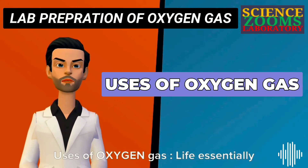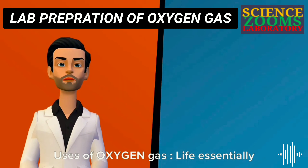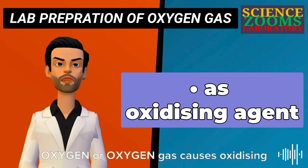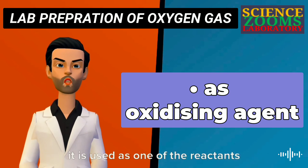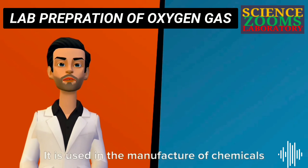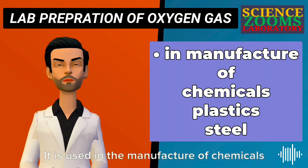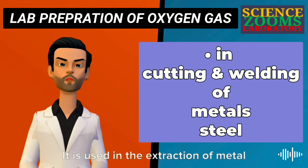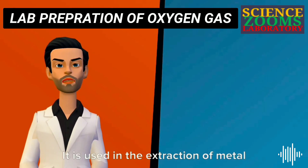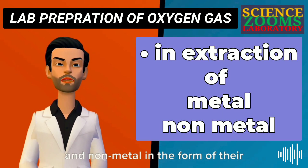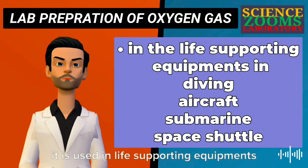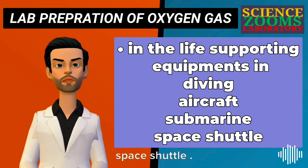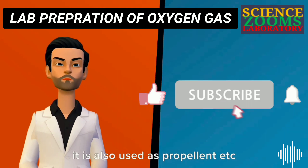Uses of oxygen gas: life essentially requires oxygen gas to live. It causes oxidation of substances and is used as a reactant itself. It is used in the manufacture of chemicals, plastics, and steel; in cutting and welding of metals; in extraction of metals and non-metals as their oxides; in life-supporting equipment for diving, aircraft, submarines, and space shuttles; and also as a propellant.